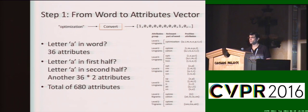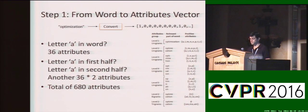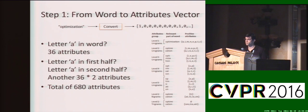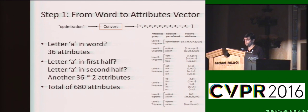We define level 2 attributes as, for example, does the word contain the letter A in the second half of the word. For example, the word 'optimization' contains the letter A in the second half but not in the first half. This gives us an additional 72 attributes. We do the same for levels 3, 4, and 5, and also for 50 common bigrams and 20 common trigrams, eventually getting us to a total of 680 binary attributes.